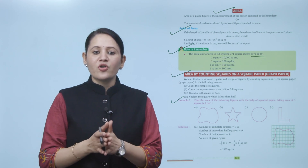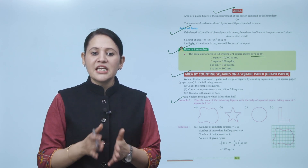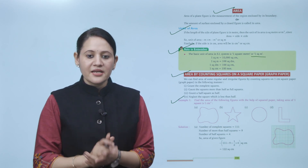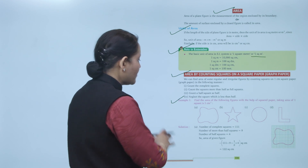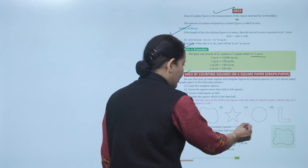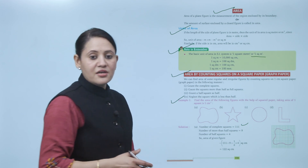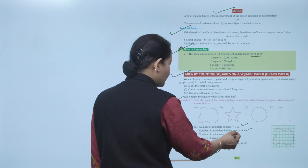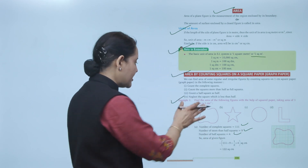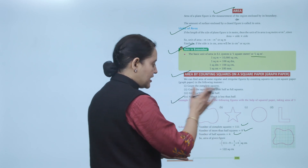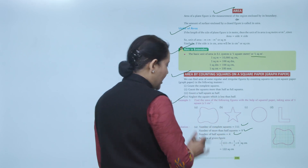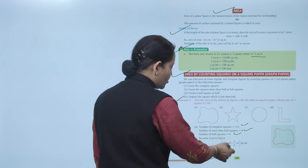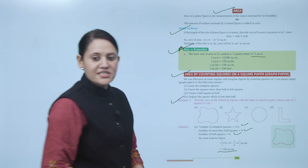Find the area of the following figure using square paper, taking area of one square as one square centimeter. In this figure, we first count the complete number of squares, which is 111. Then the number of more-than-half squares, which is 9. The number of half squares is 4. So area equals 111 plus 9 plus one-half times 4, giving a total area of 122 square centimeters.